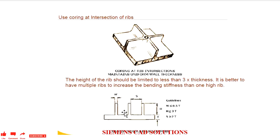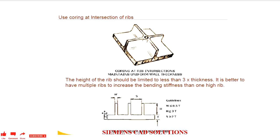The height of the rib should be limited. The height of the rib should be 3 times the wall thickness of the part. It is better to have multiple ribs to increase the bending stiffness, instead of keeping just one. The gap between each rib should be greater than 2T, where T is the thickness. And if you are having warping along the x-axis, then your rib should be perpendicular to the x-axis — only then will the rib act as stiffness to the part.